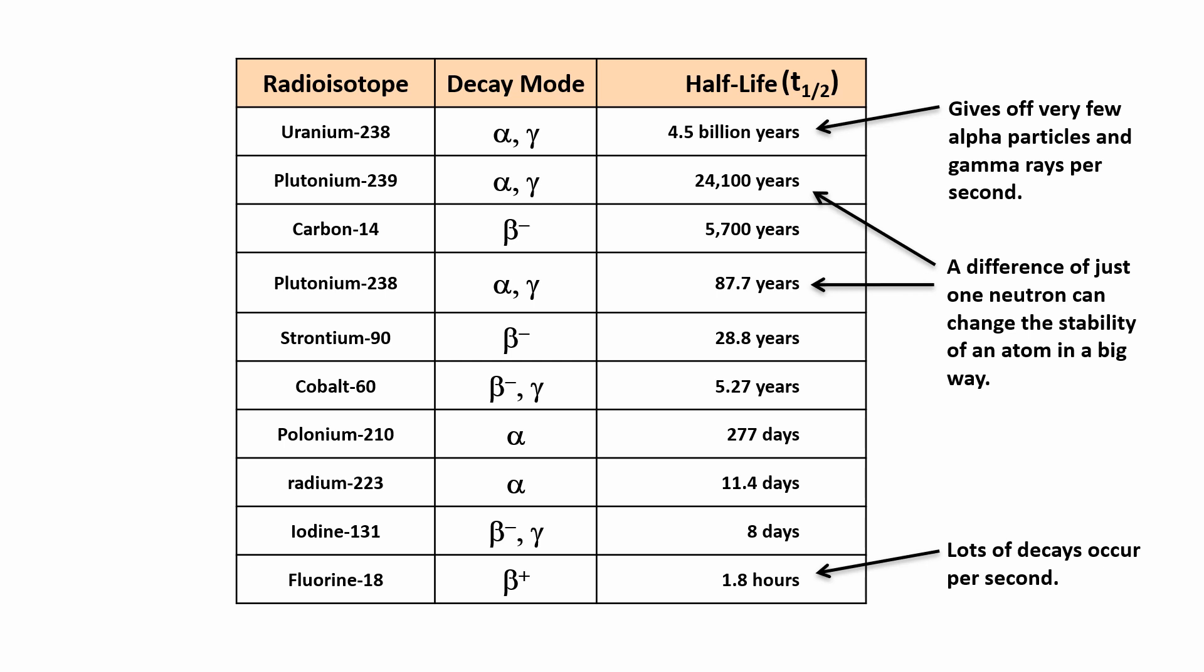When it comes to half-life, it turns out that there are no obvious patterns in the proton-to-neutron ratio that allow us to predict what the half-life of a natural radioisotope would be. It can only be determined experimentally.